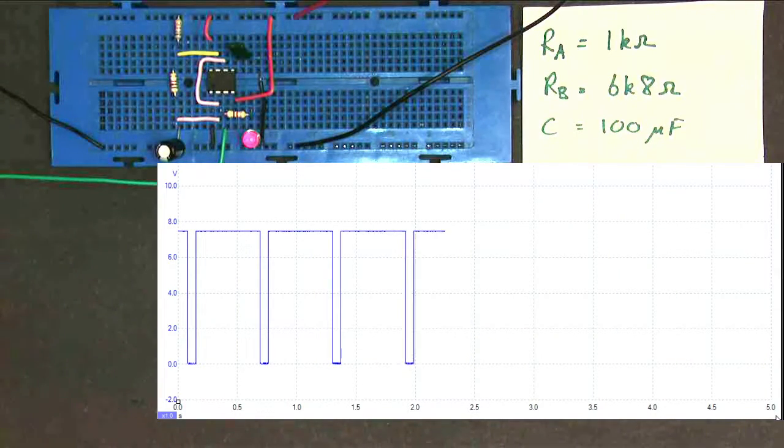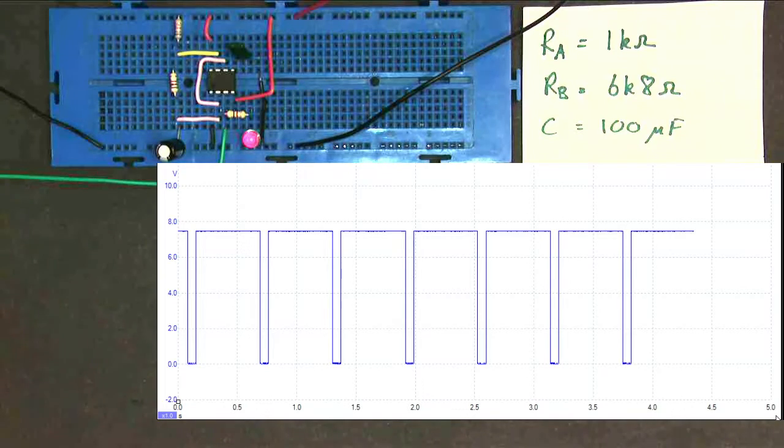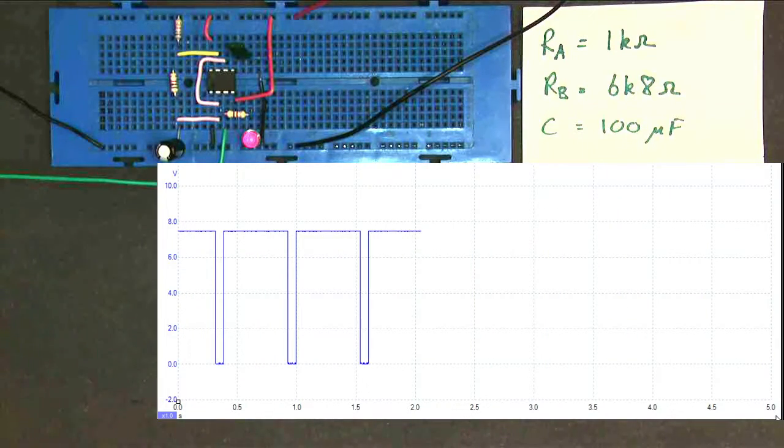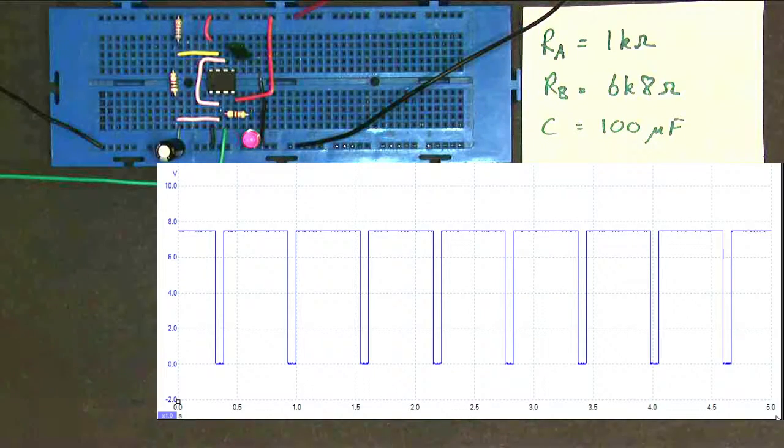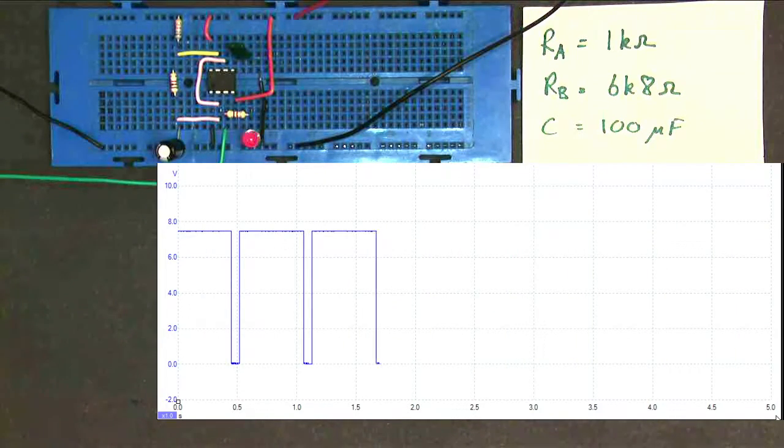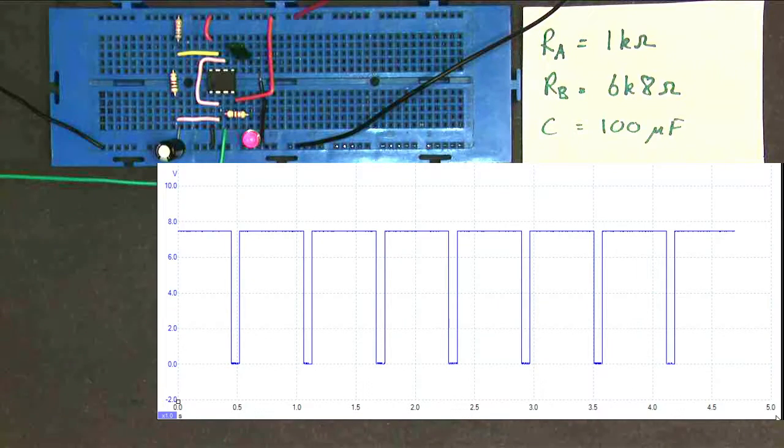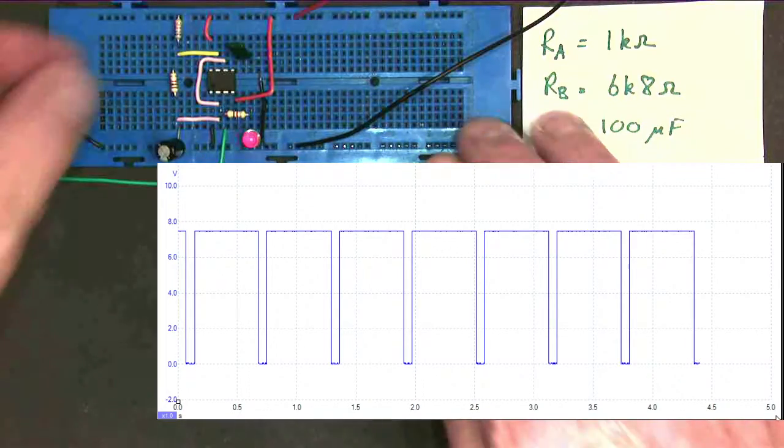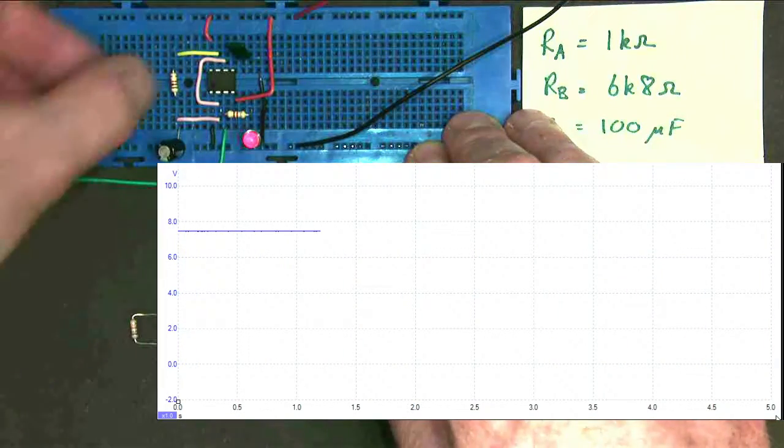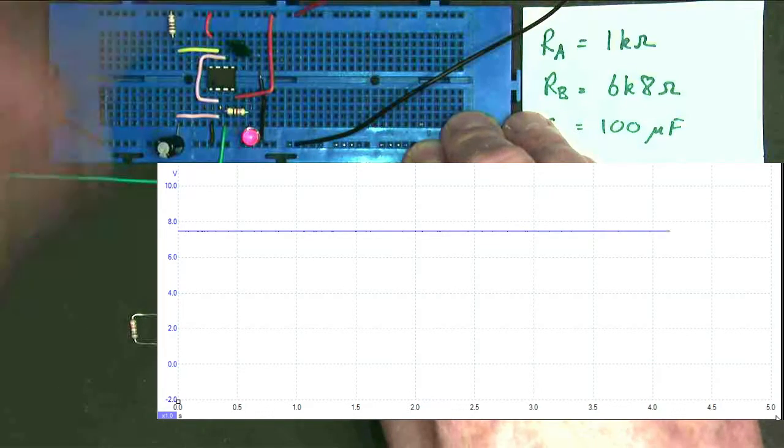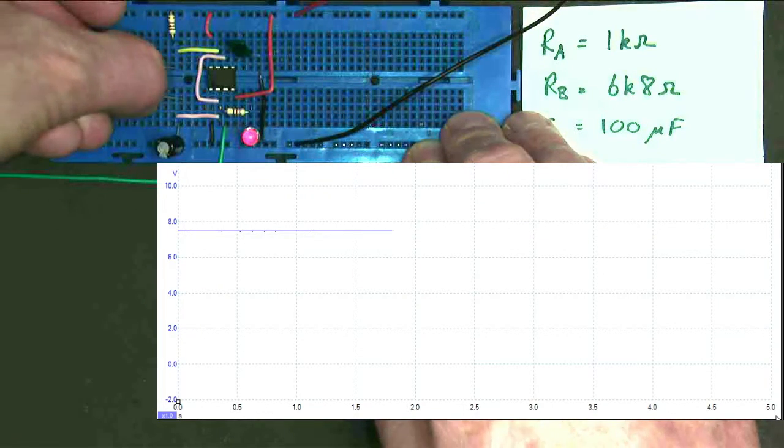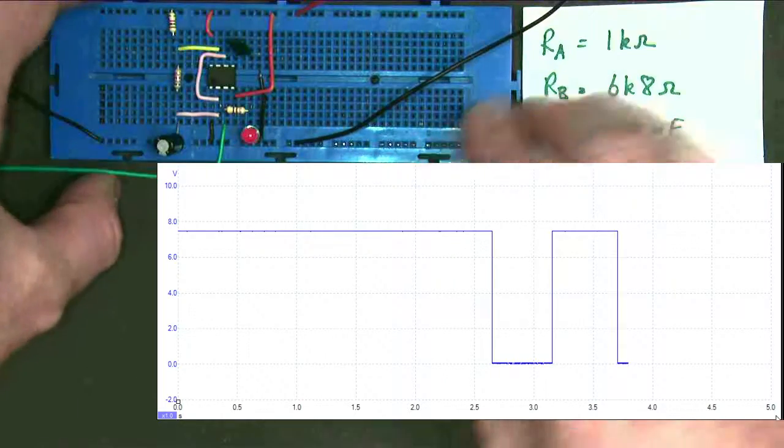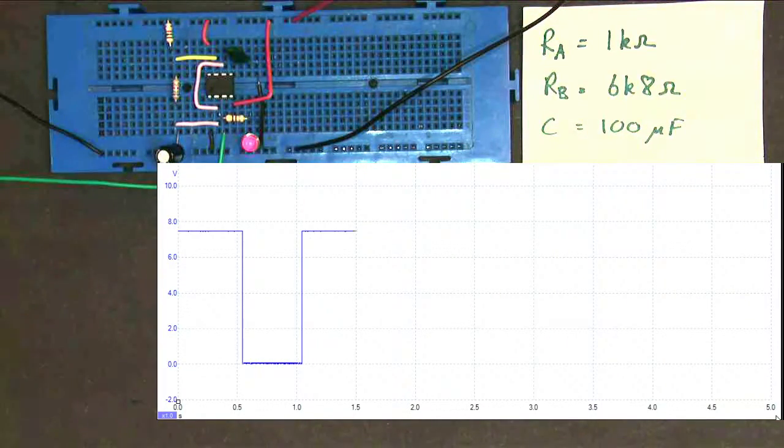But there's something else important as well. The waveform is now no longer square. The mark, the on time, is now much longer than the space, the off time. So the 555 A-stable will never actually produce a square wave. The mark is always longer than the space. If you make the RA quite a small value resistor, and the smallest you can use is 1K, then in actual fact the mark and the space are reasonably similar in time period, and you get a reasonably square wave. But it's never actually square. So if you want a proper square wave, you'll have to use a different type of A-stable.